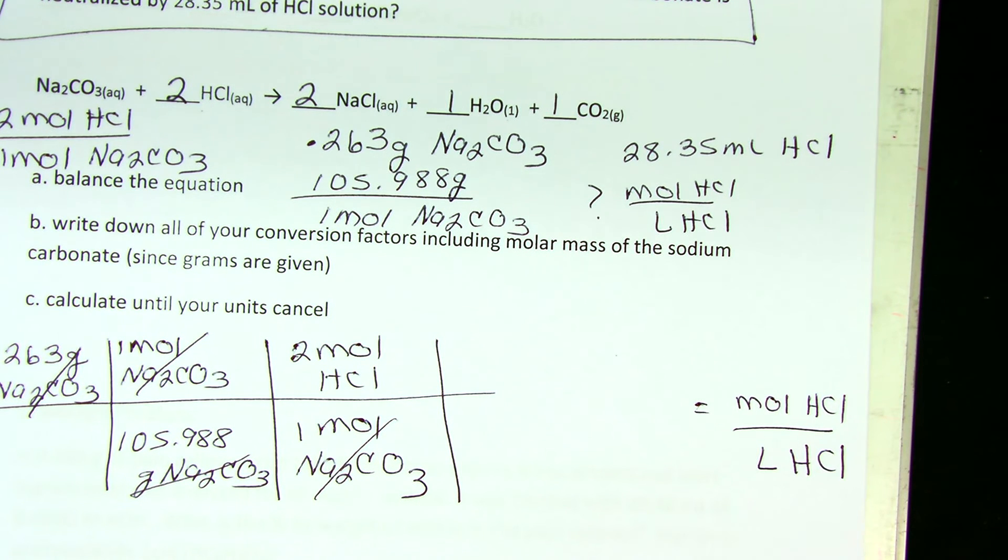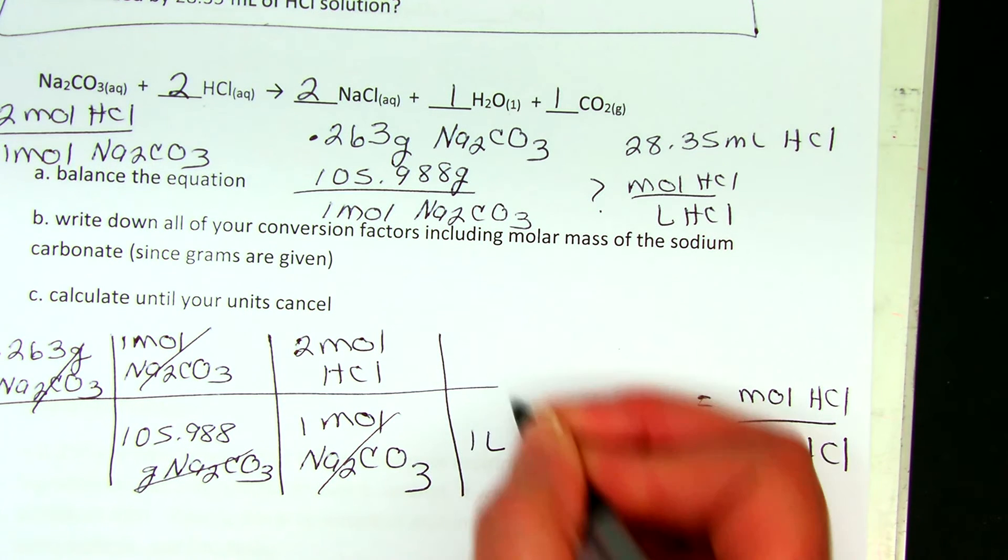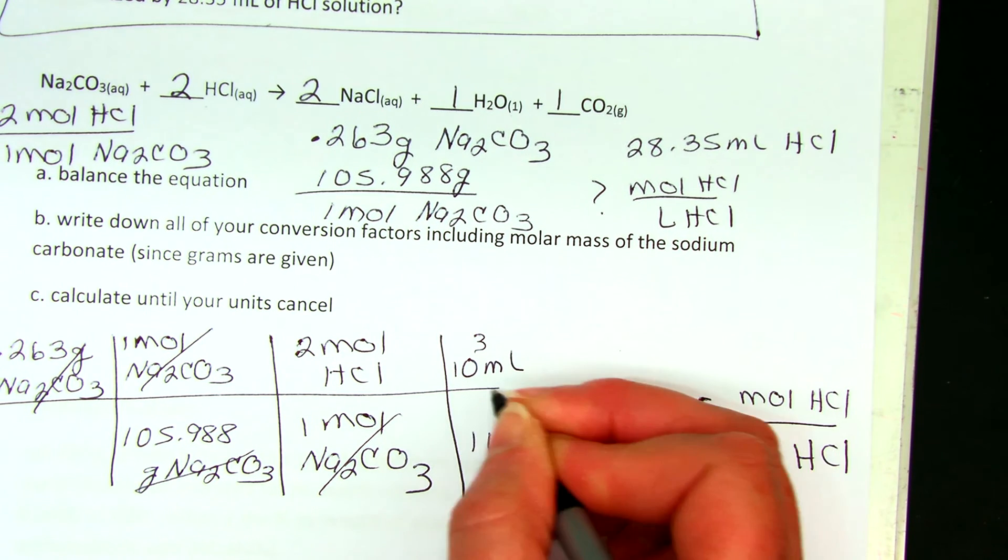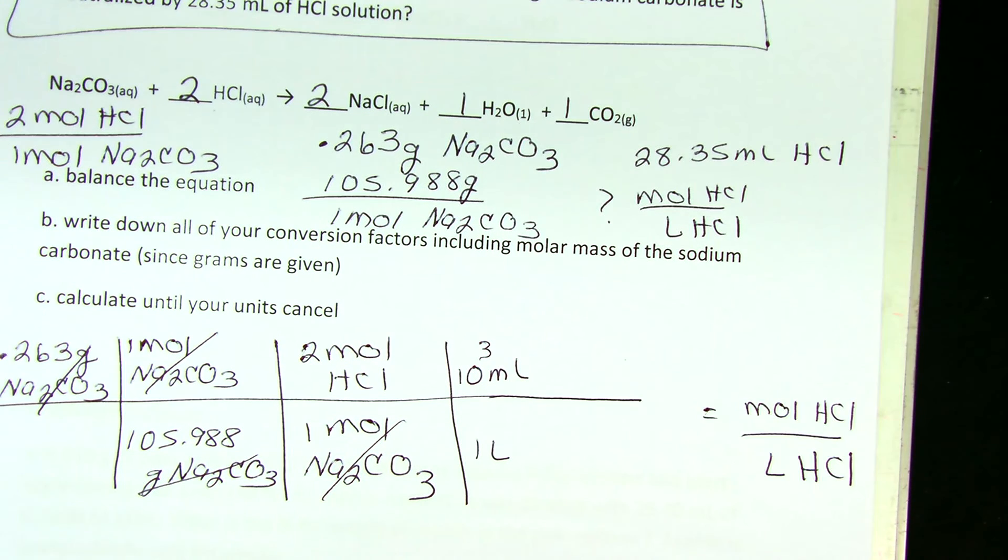The unit I want is moles of HCl per liter of HCl, and right now I have moles of HCl. Put liters on the bottom—sure, one liter is a thousand milliliters. Now what?